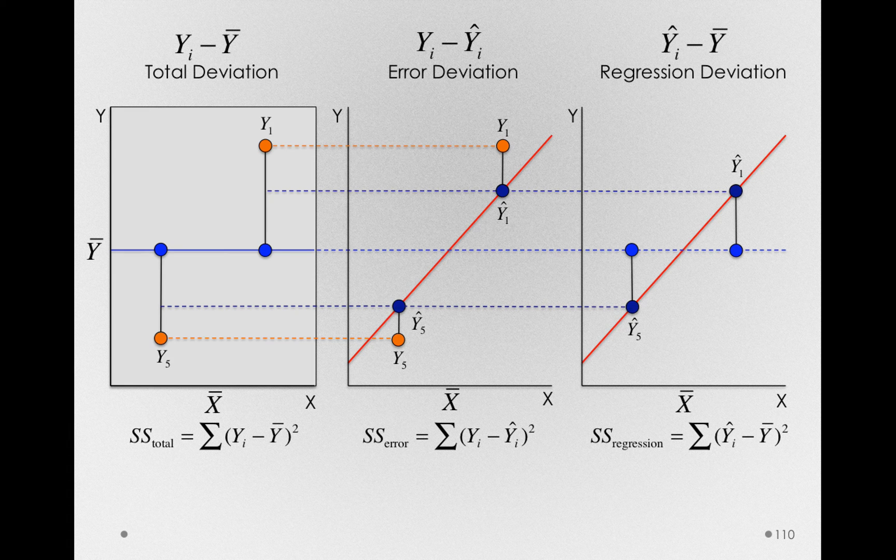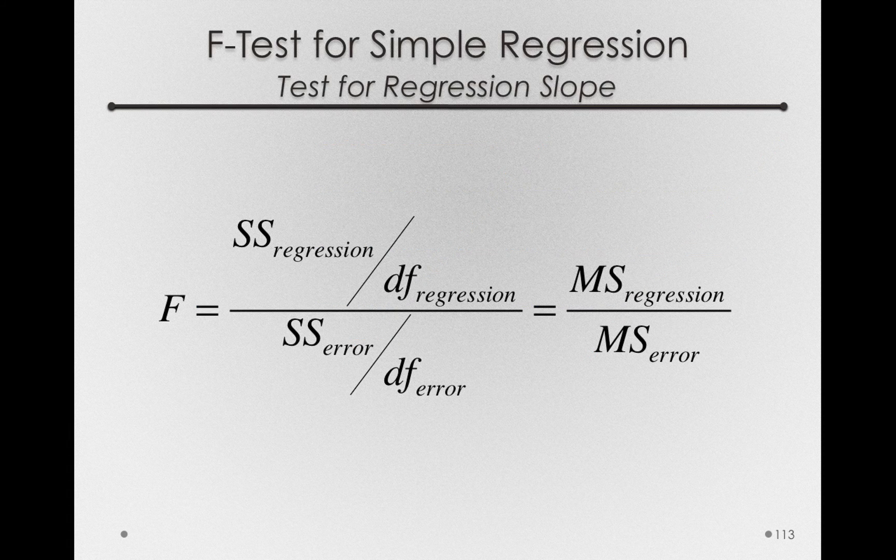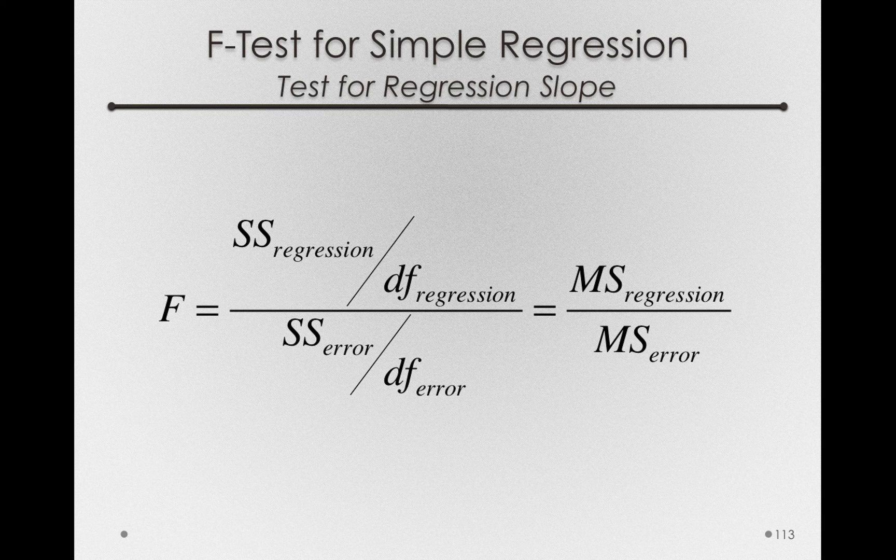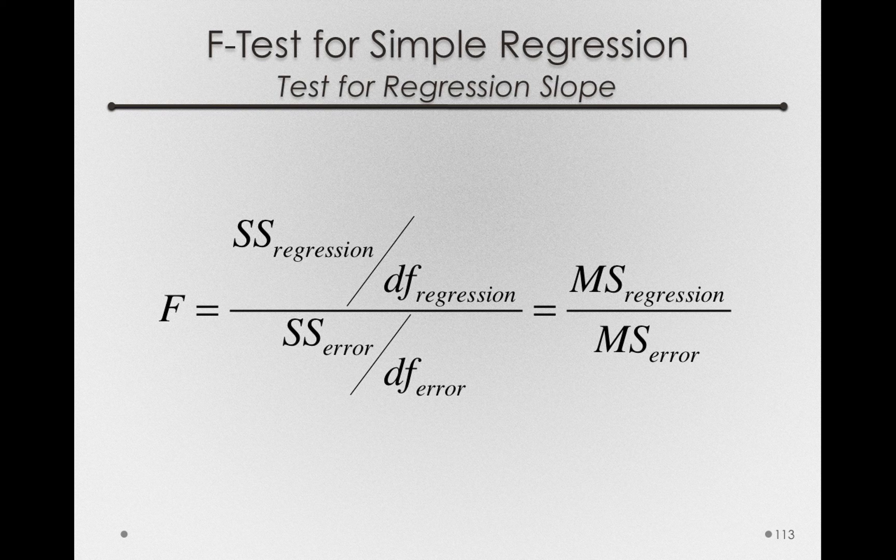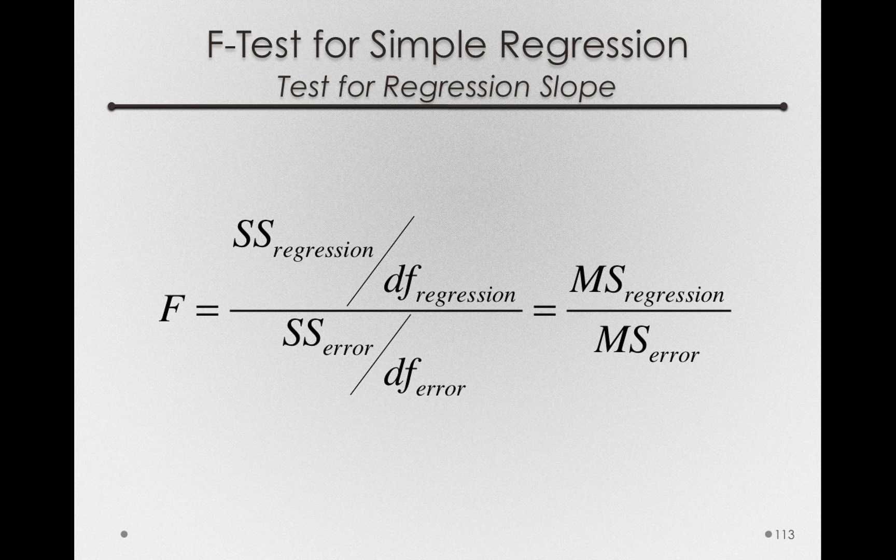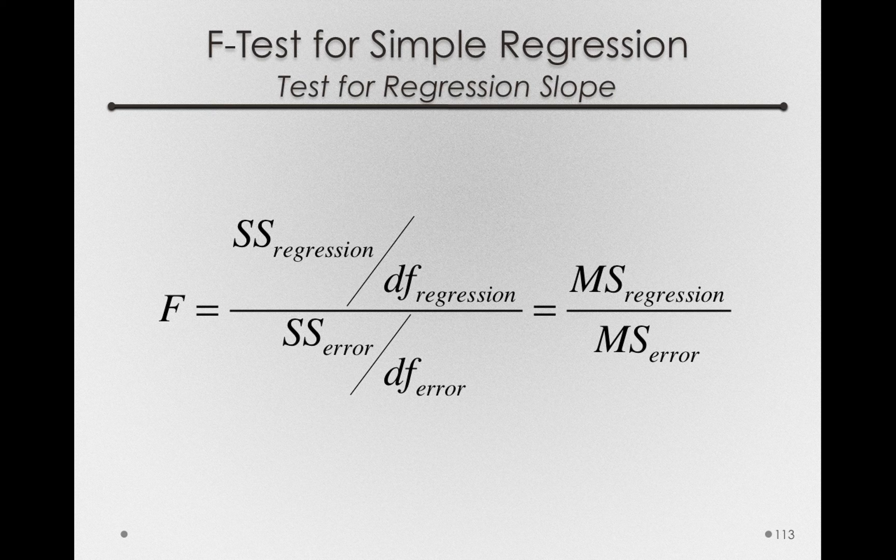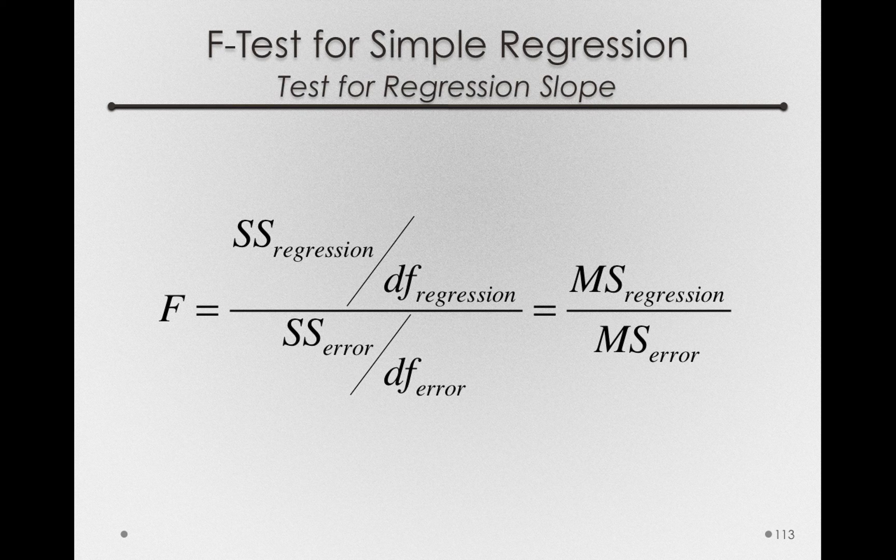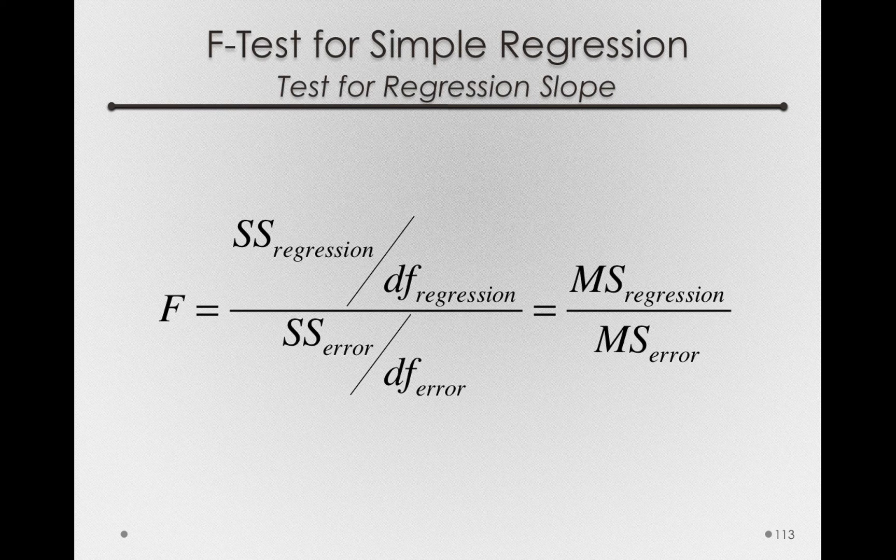Now with these error and regression deviations, we can form an f-test for the simple regression slope. Just like we did before, we'll form mean squares. So sums of squares regression divided by the degrees of freedom regression divided by sums of squares error divided by degrees of freedom error. And this yields for us a mean square for regression, just like a mean square for treatment, divided by the mean square for error. So just like before, we'll get an f-test, and from the f-test, we can derive a p-value.